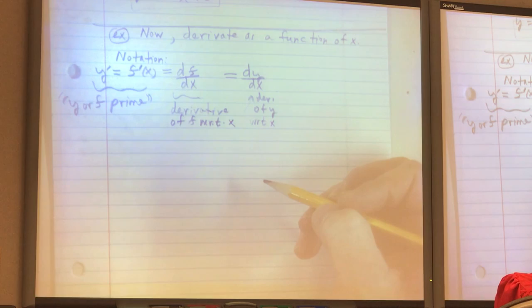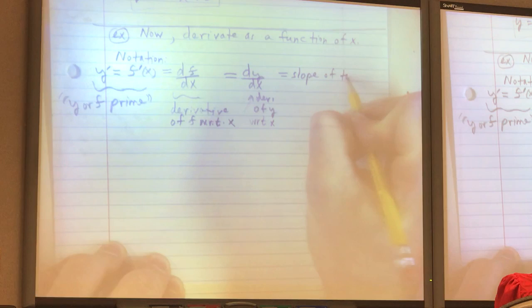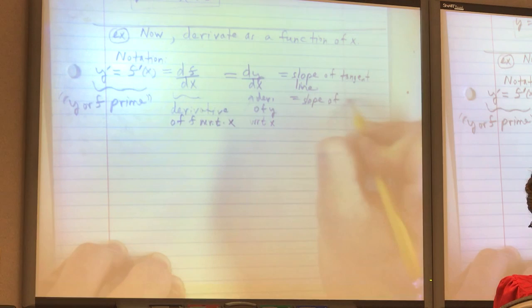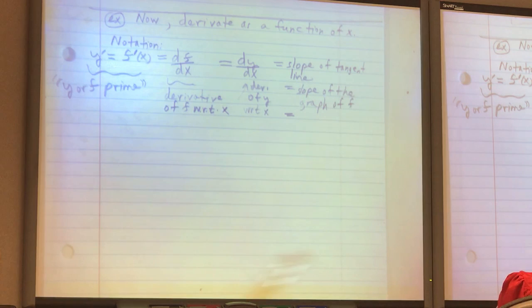And again, this means slope of tangent line. And it's the slope of the graph itself of f. And what else do you remember that it was? We started with average rate of change, so the derivative was what then? When we took the limit. We went from average rate of change to instantaneous rate of change.